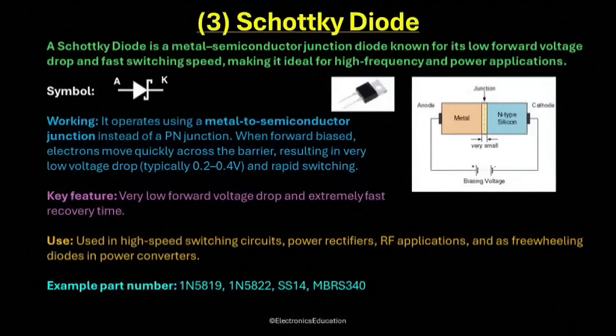When the diode is reverse-biased, the metal semiconductor barrier prevents current flow, similar to a normal diode, but the reverse leakage current is slightly higher due to the thin barrier region. The key feature of a Schottky diode is its very low forward voltage drop and extremely fast recovery time. Because of these properties, it is widely used in circuits that require fast response and high efficiency.